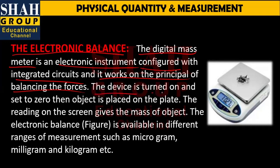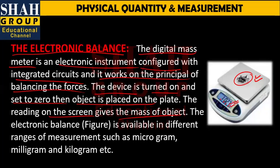The device is turned on and set to zero. As soon as you turn this device on, you set its scale to zero. When no object is placed, you first set the reading to zero, then you place the object on the plate. The reading on the screen then gives the mass of the object.